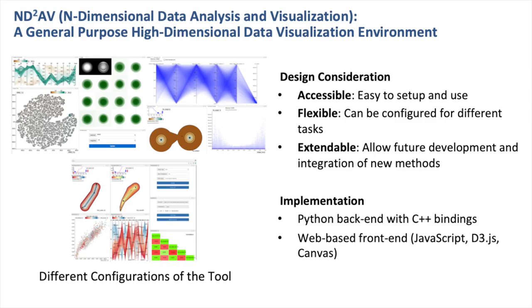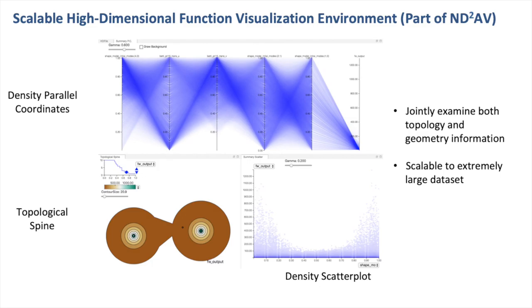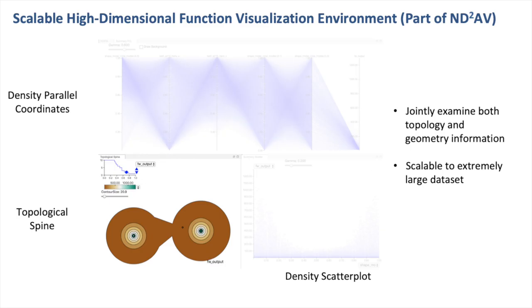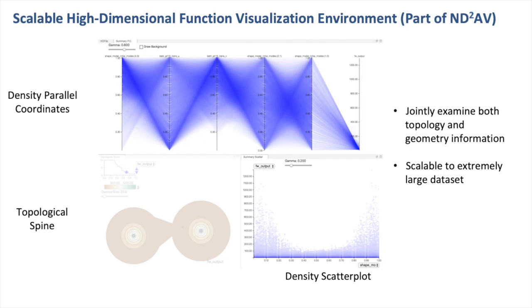The NDAB employs a visualization client and computational server setup designed with accessibility, flexibility, and extensibility in mind. The environment for the target application has three views. The topological spine view reveals the high-level structure of the error landscape, whereas the density-based scatterplot and parallel coordinate view help relate those structures to individual dimensions. By adopting a topological-aware data cube aggregation scheme, we allow joint exploration of both topological and geometrical insights of datasets consisting of millions of samples.